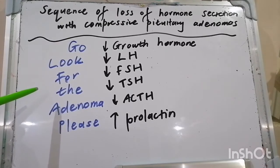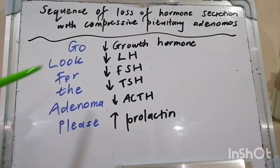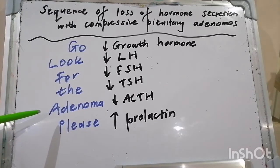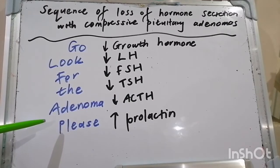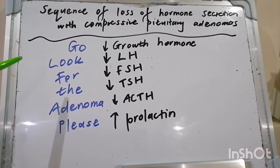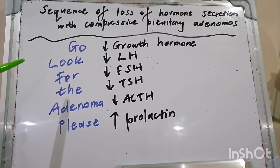Hyperprolactinemia in females manifests with amenorrhea, oligomenorrhea, galactorrhea, infertility, sexual dysfunction, and osteoporosis. Hypoprolactinemia in men manifests with erectile dysfunction, infertility, and osteoporosis. Don't forget about osteoporosis in both.